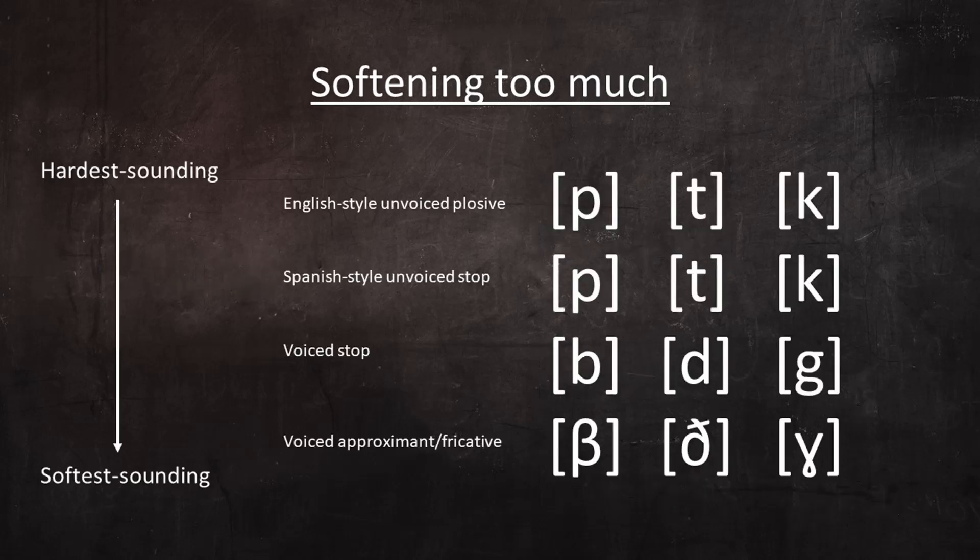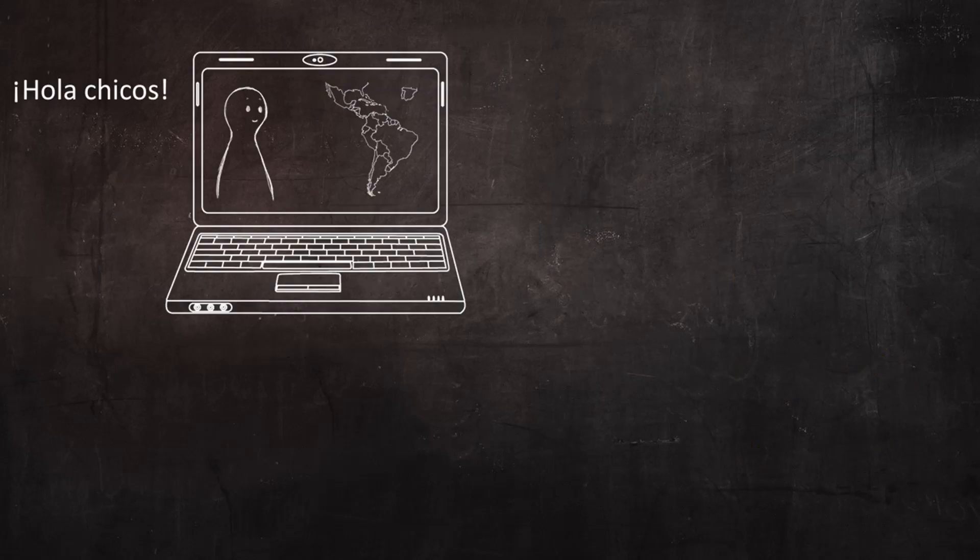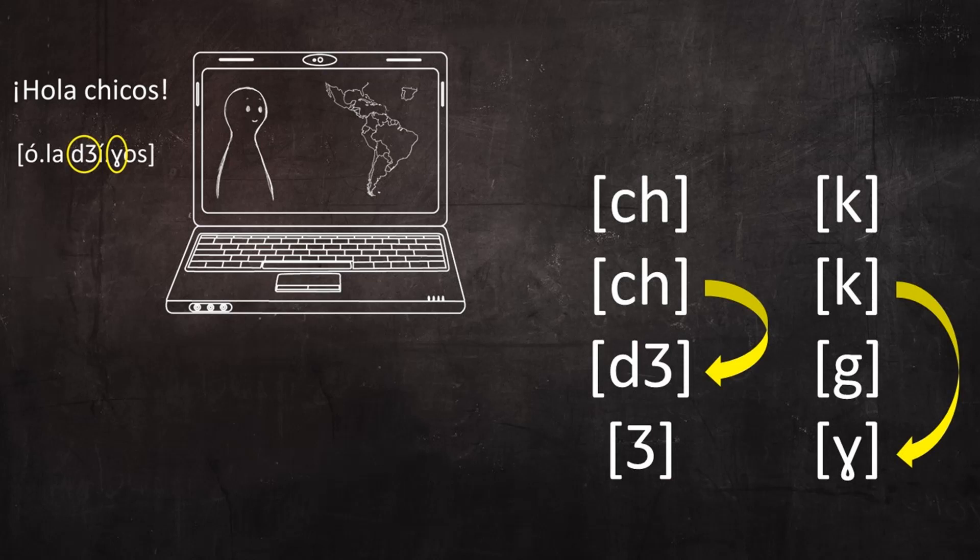And of course, this system of hard to soft applies to all the sounds we've discussed today, with English-style plosives as the hardest sounds and Spanish-style approximants and fricatives as the softest. And students who over-soften the bilabials over-soften all the other sounds in an analogous way. In fact, let's take a look at the example that inspired the topic of this video. The YouTuber pronounced this phrase like this. He voiced the CH and he pronounced the hard C, phonetically the K sound, as an approximate G.